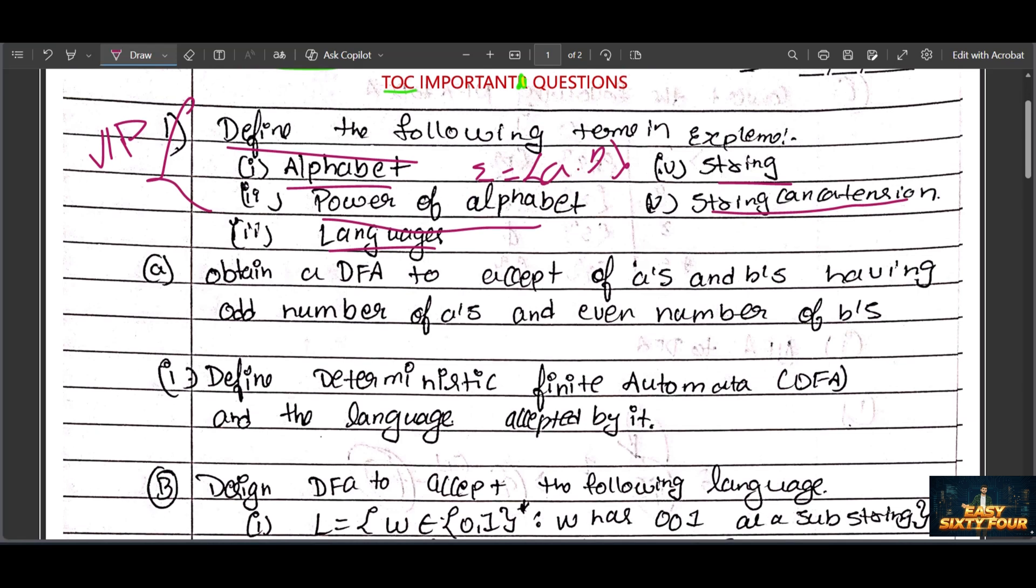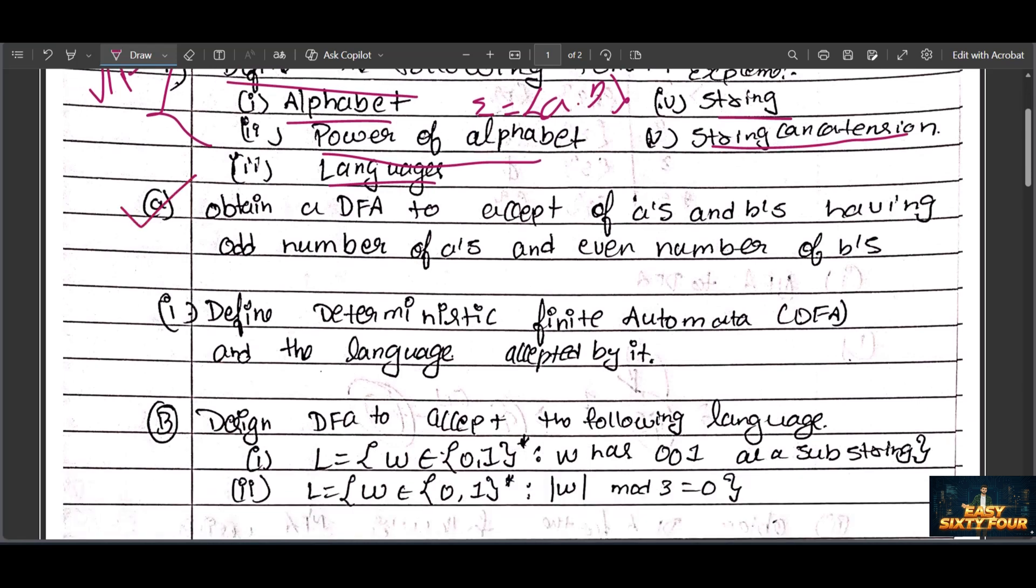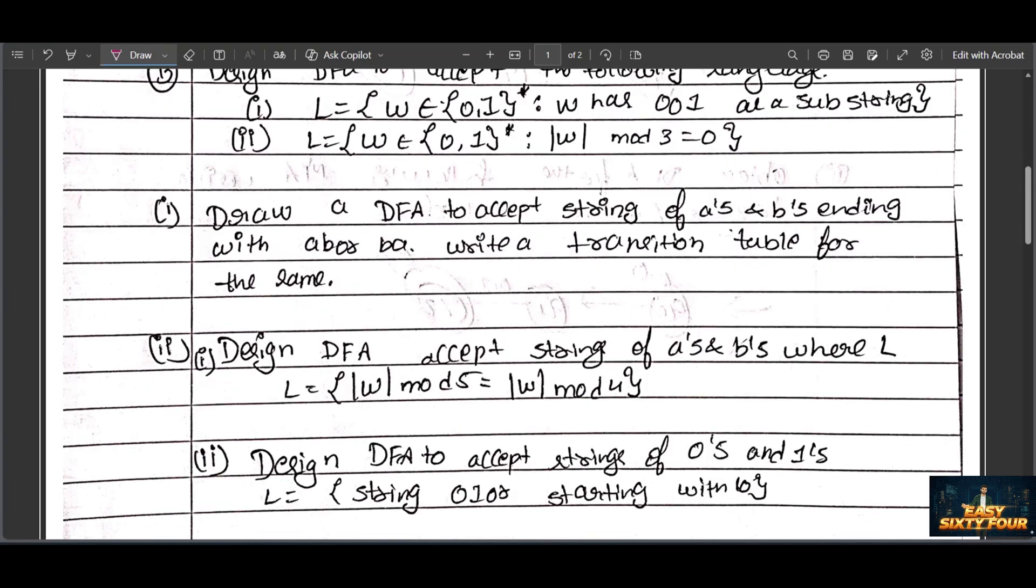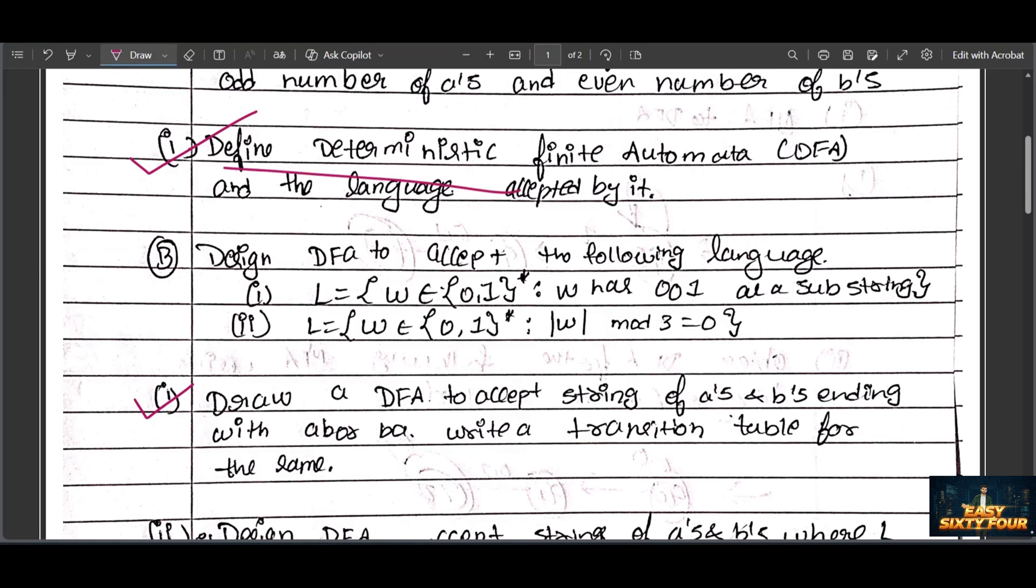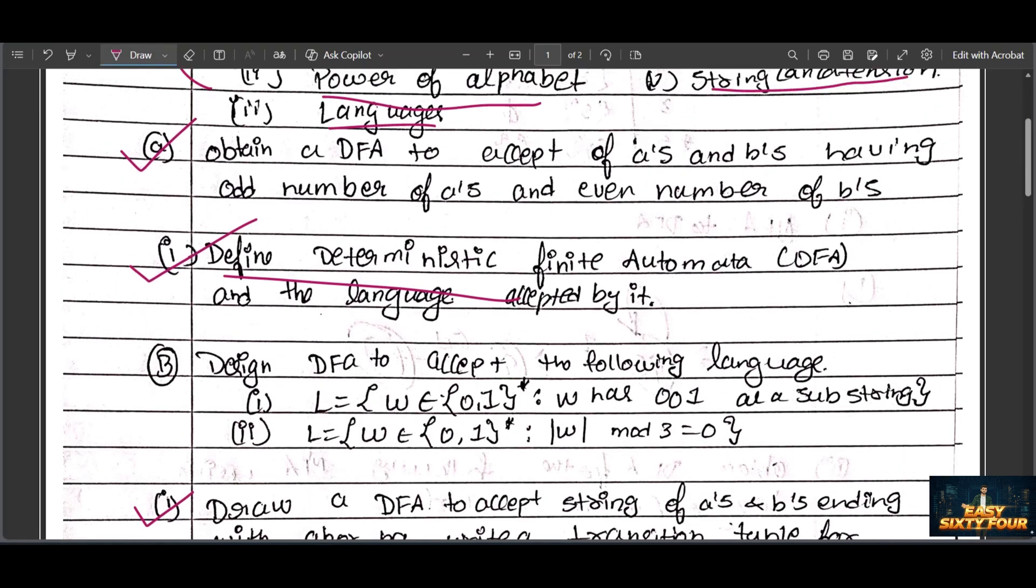After that, we have three questions. The third question is on Deterministic Finite Automata. Define the deterministic finite automata and the language accepted by it - also a more important question.